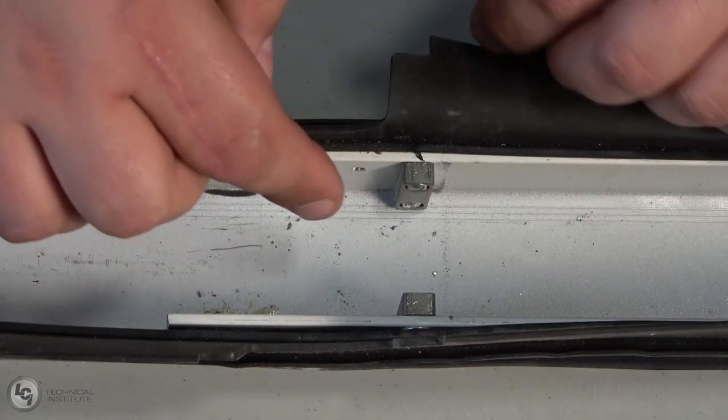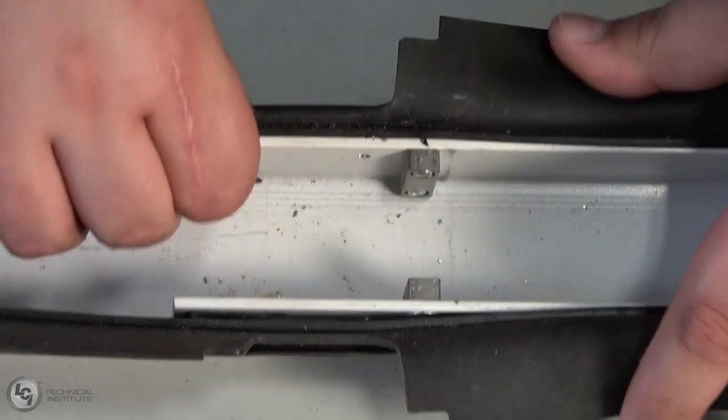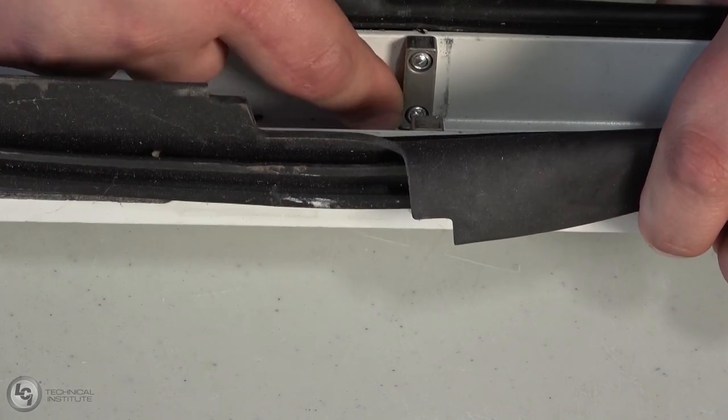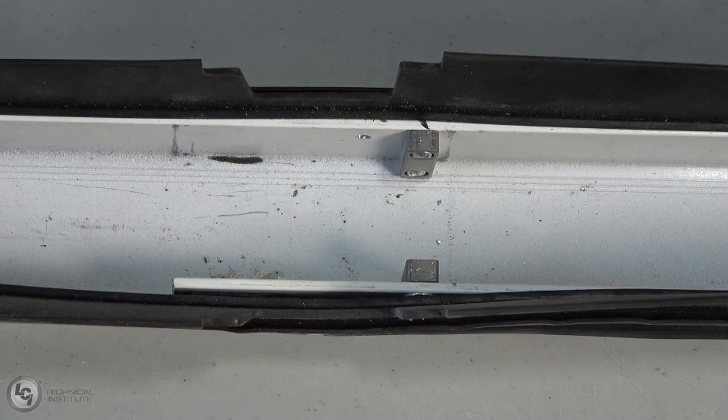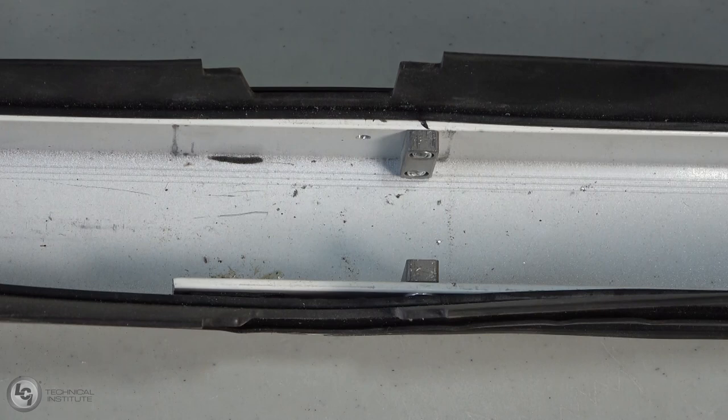The last two things to be inspected are the Gibbs and the column. The Gibbs are the two metal pieces riveted to the side of the column that the bearing blocks fit around. Make sure the Gibbs are firmly held in place by the rivets. If the Gibbs or column are damaged, we will again be replacing the entire assembly with a new one.